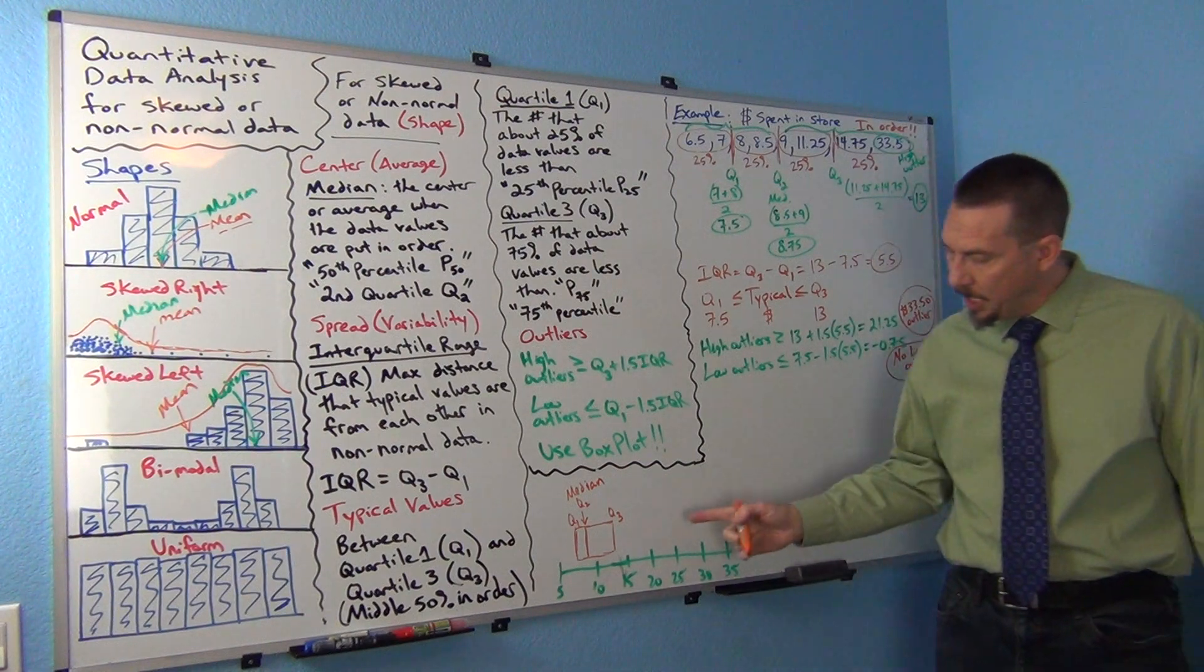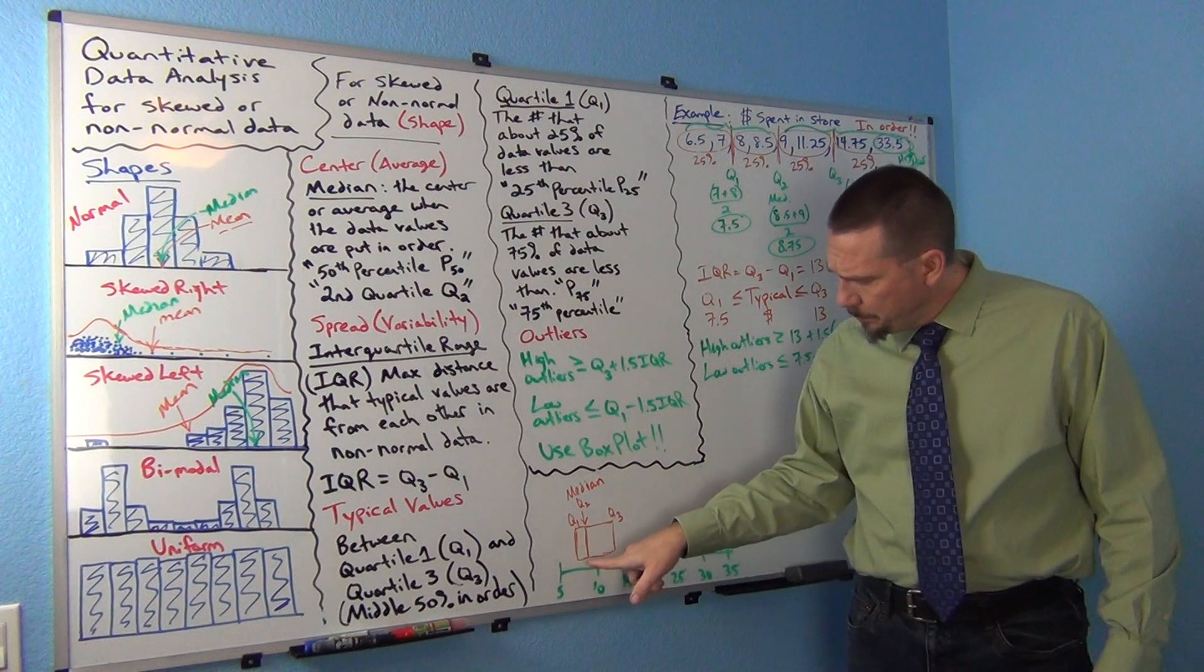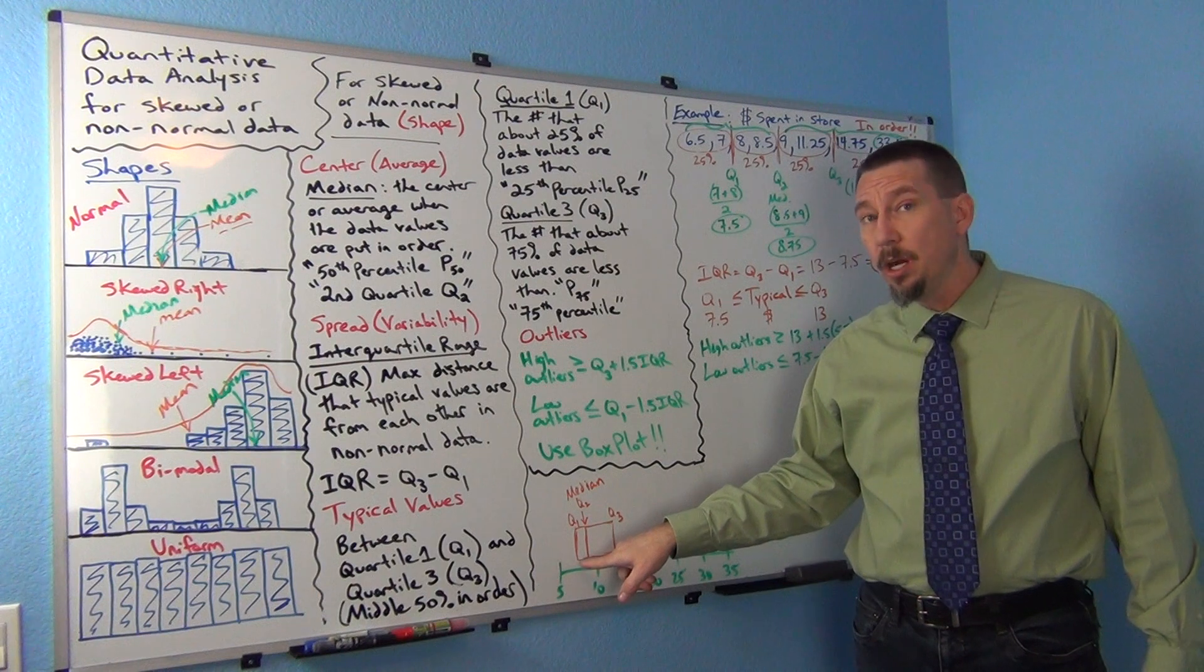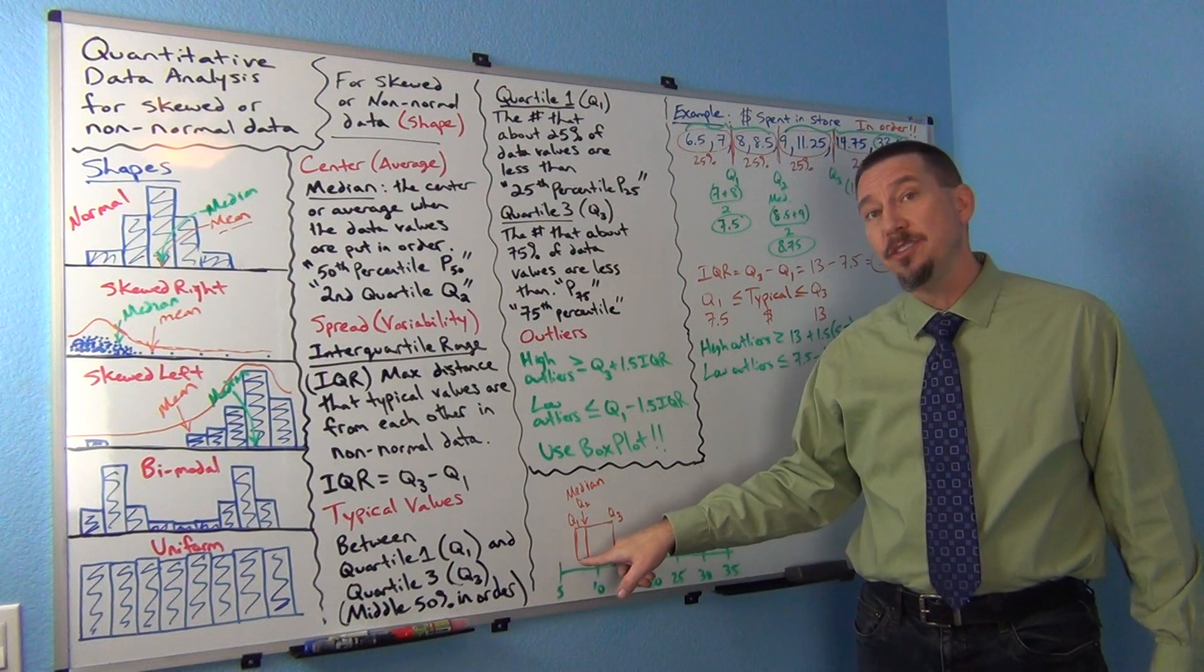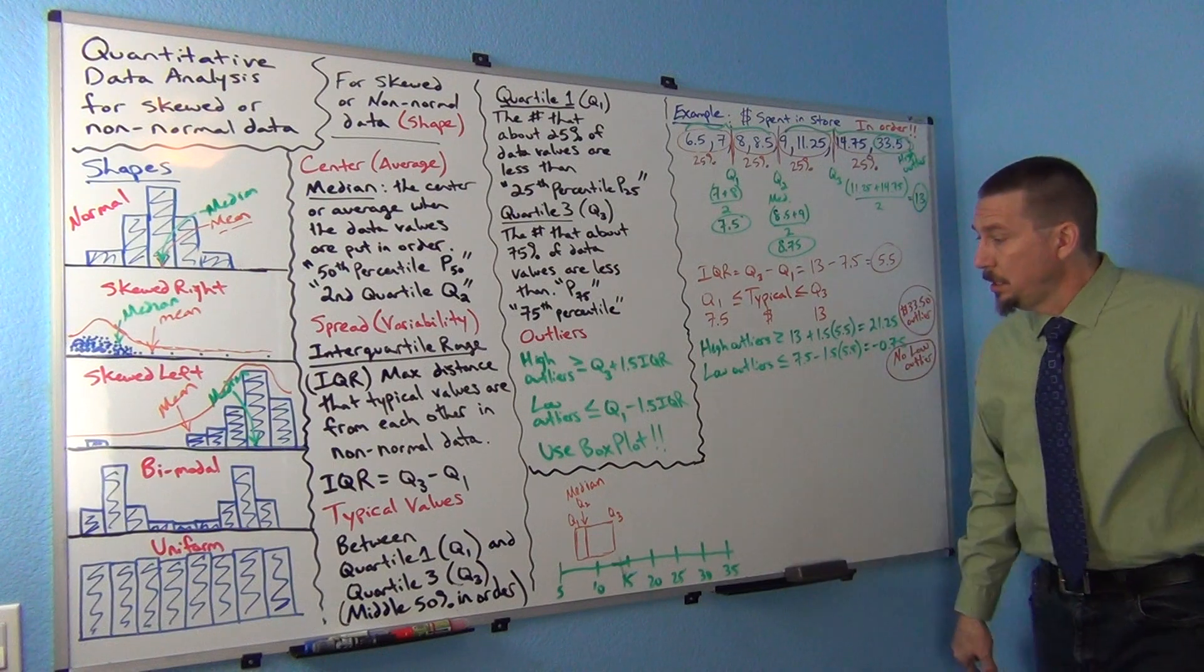So when you see the box, think of this as the line in the box is the average, and the length of your box actually is IQR. So that's the length of your box is your spread, is your typical spread.